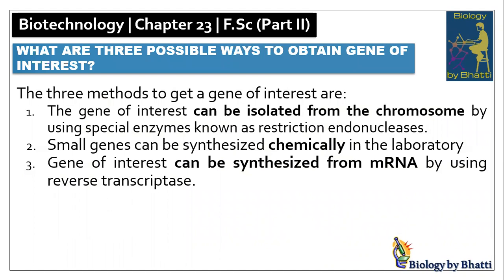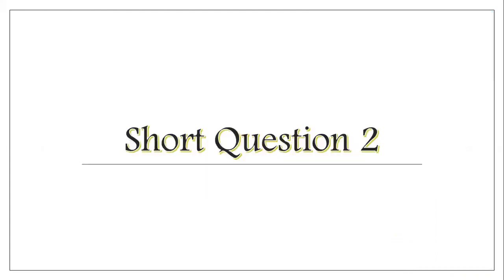The answer has three methods. The first method is that you can obtain the gene of interest directly from the chromosome where it exists. If we know the chromosome number and the locus of that gene, we can isolate it using restriction endonucleases. The second method is that if the gene size is small, we can chemically synthesize it in the laboratory. Third, we can obtain the gene from messenger RNA via reverse transcription, using the enzyme reverse transcriptase.